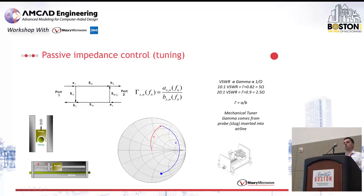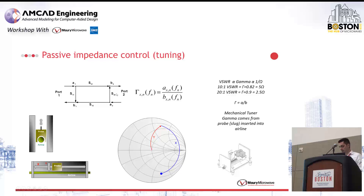Mechanical tuners are quite nice because they're simple to use. They're robust. They can handle very high powers. They have some limitations. Specifically, it's a passive instrument, so the A wave coming back onto your device under test will always be lower than the B wave. So you cannot cover the whole Smith chart, which is especially important with very large devices. They can be rather slow because they have to move for every single impedance mechanically with a motor.